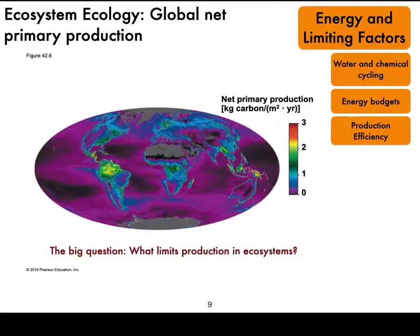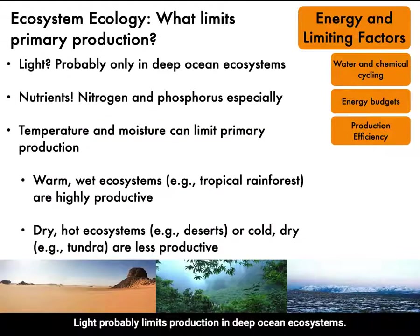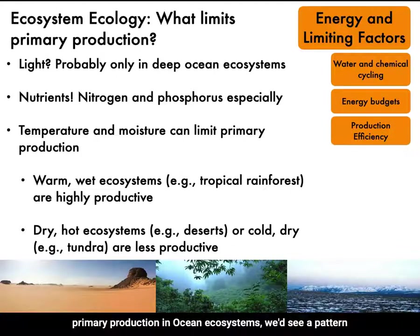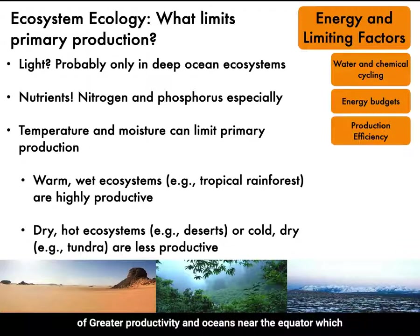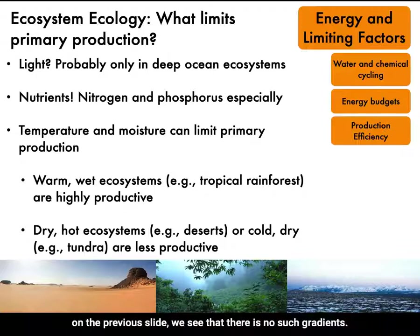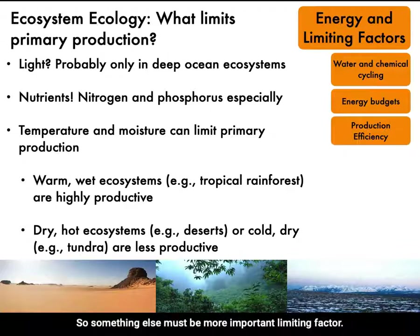Light probably limits production in deep ocean ecosystems. However, if light was the most important factor limiting primary production in ocean ecosystems, we'd see a pattern of greater productivity in oceans near the equator, which receives the most intense solar radiation. But from the image on the previous slide, we see that there is no such gradient, so something else must be a more important limiting factor.